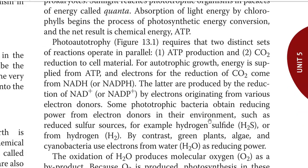Photo-autotrophy requires two distinct sets of reactions that need to operate parallelly. The first one is ATP production, and the second one is carbon dioxide reduction or carbon fixation inside the cell. For autotrophic growth, energy is supplied from ATP and electrons for the reduction of carbon dioxide directly come from NADH or NADPH. The latter are produced by the reduction of NAD+ or NADP+ by electrons originating from various electron donors inside the cell.